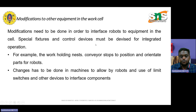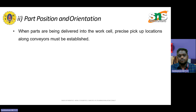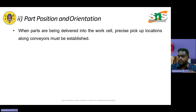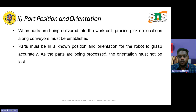Similarly, machines need to be adapted to allow the robots to work, and limit switches and other devices are used to interface the components. Regarding parts position and orientation: when parts are being delivered into a work cell, the precise pickup locations around the conveyors must be taken into consideration. The conveyors must be established, and the parts must be in known positions and orientations for the robot to grasp accurately.